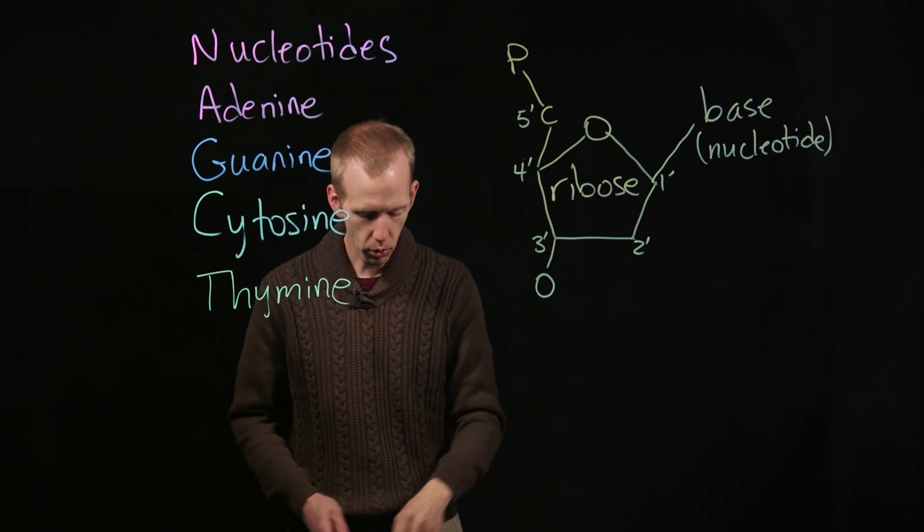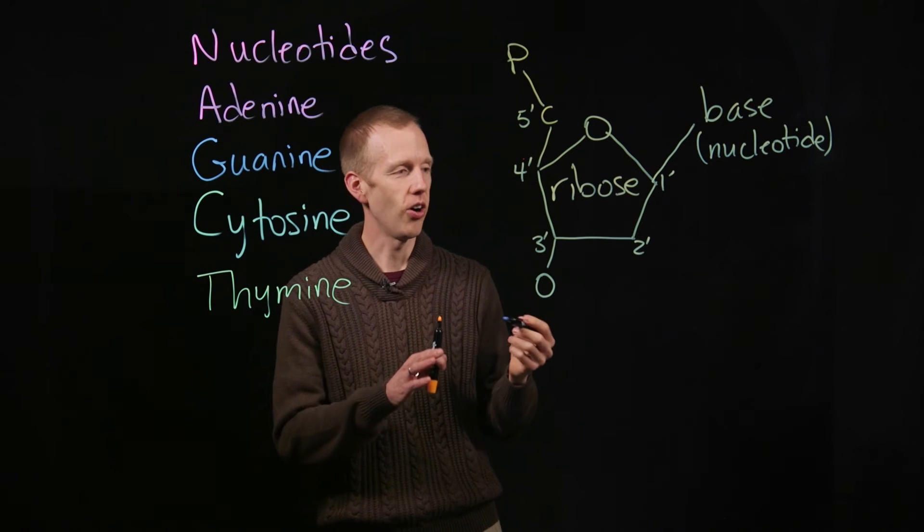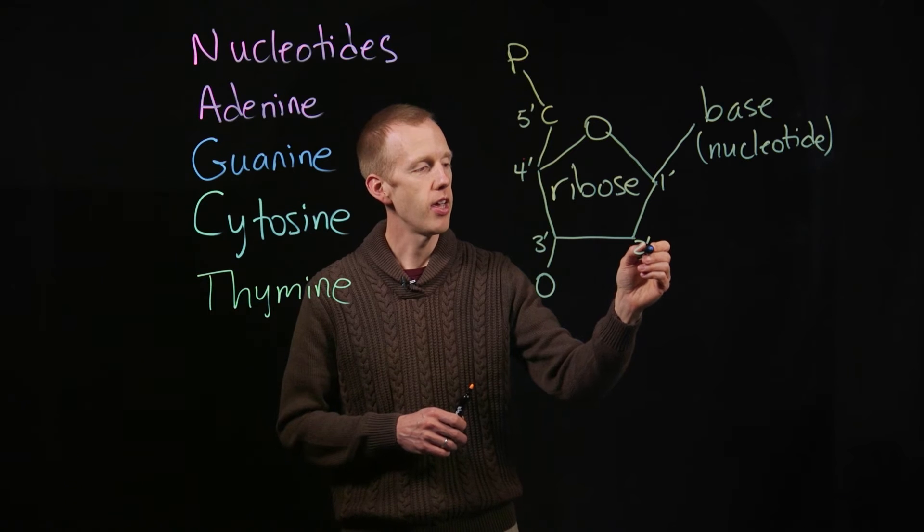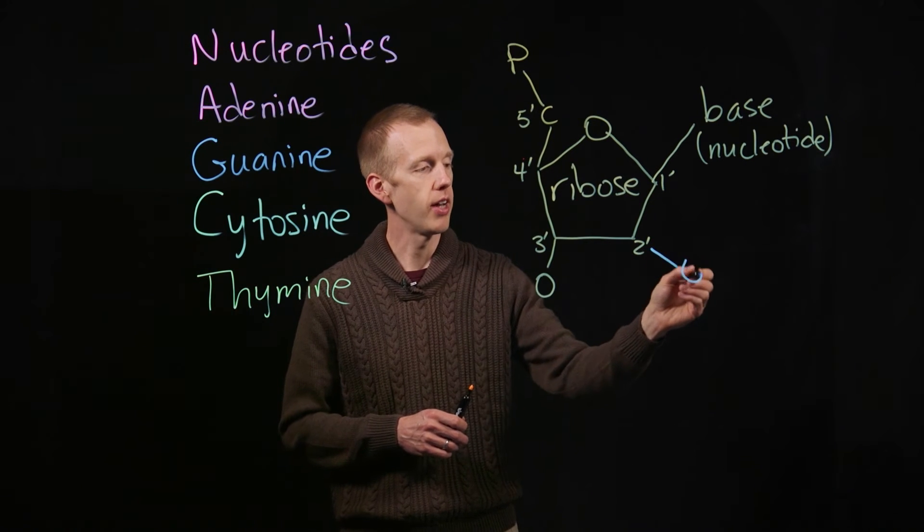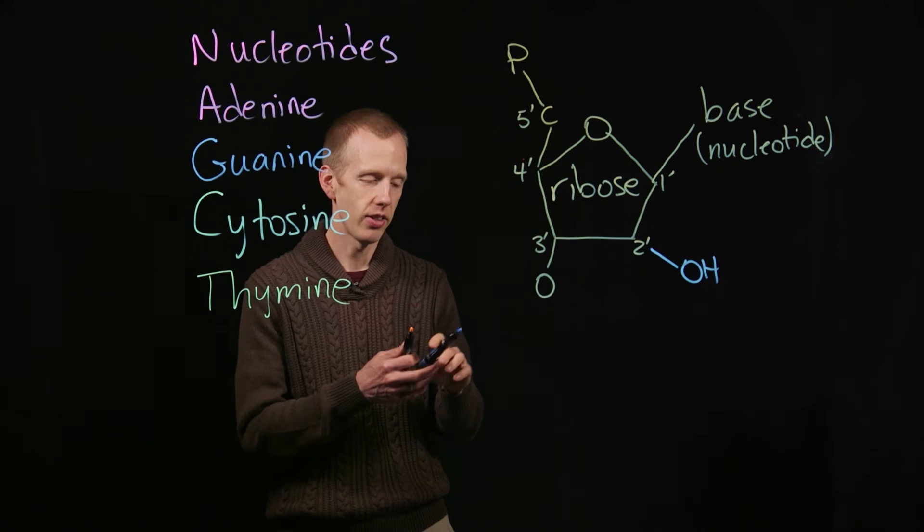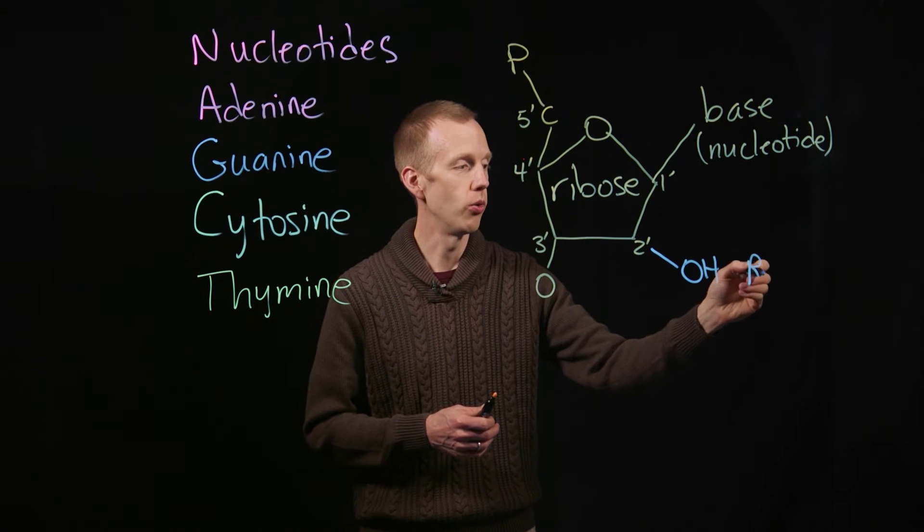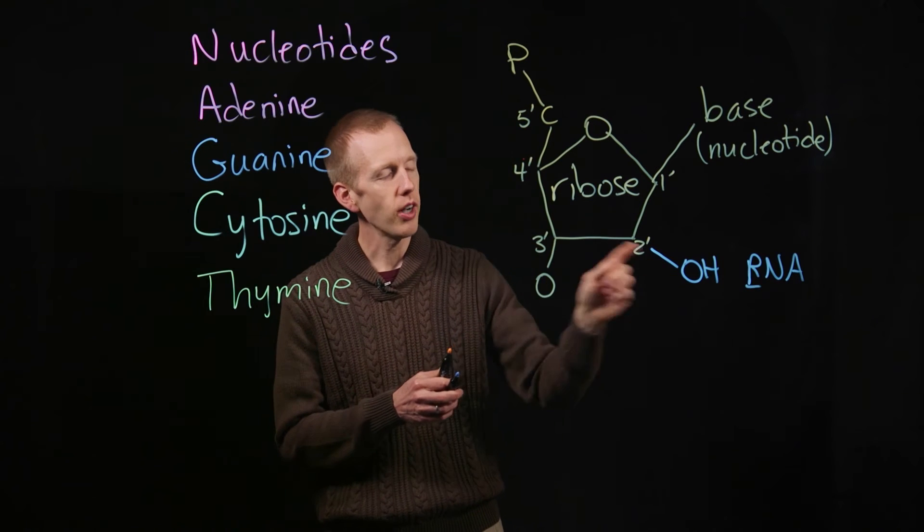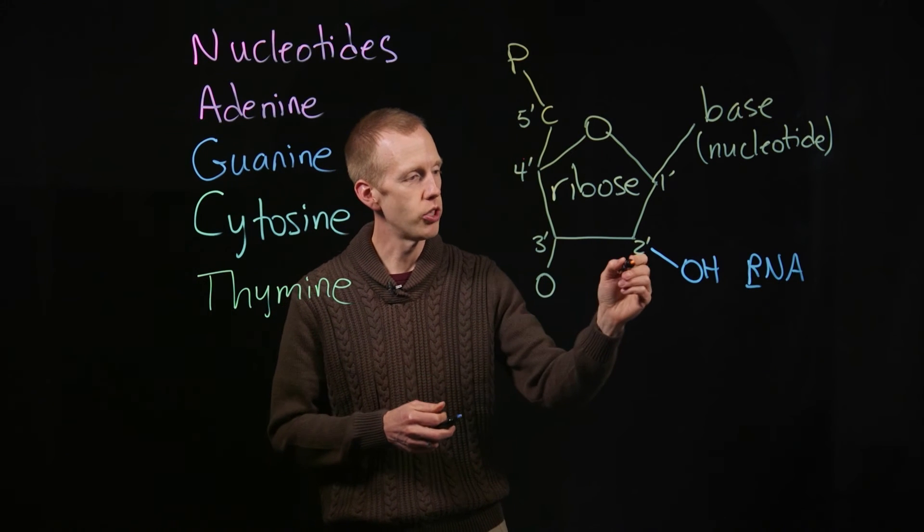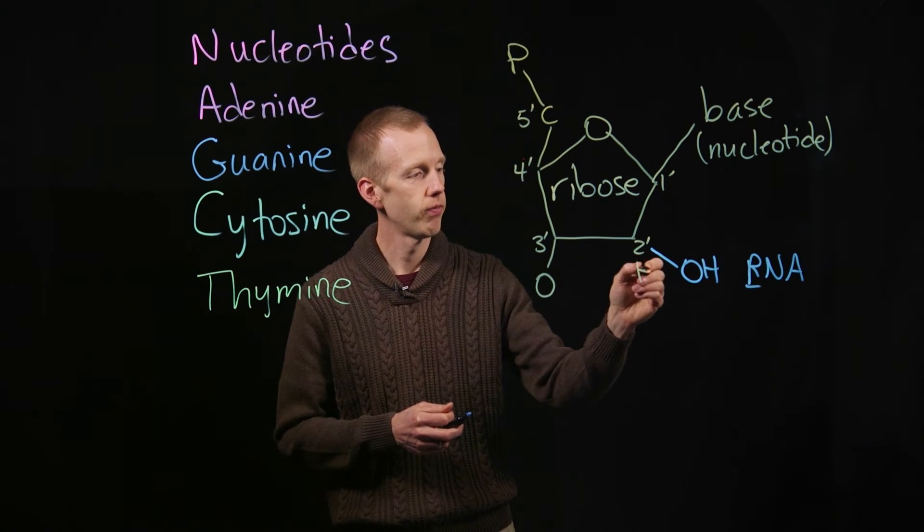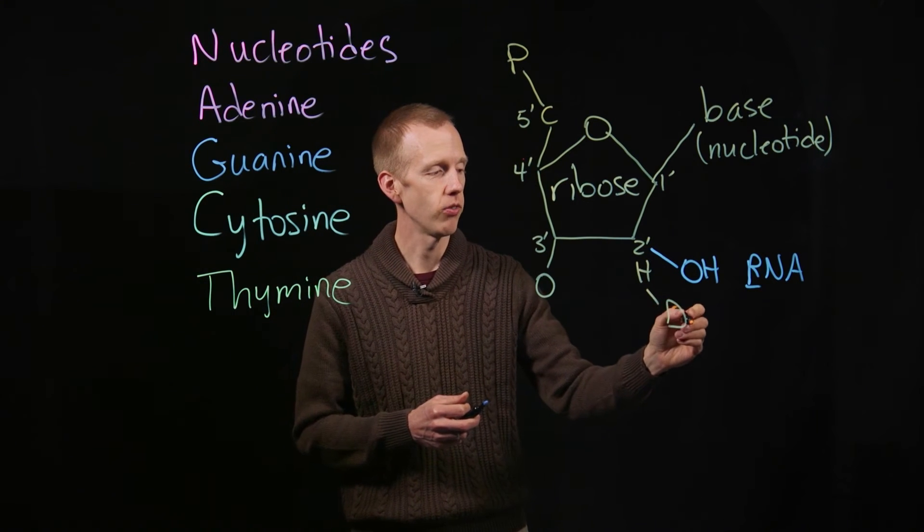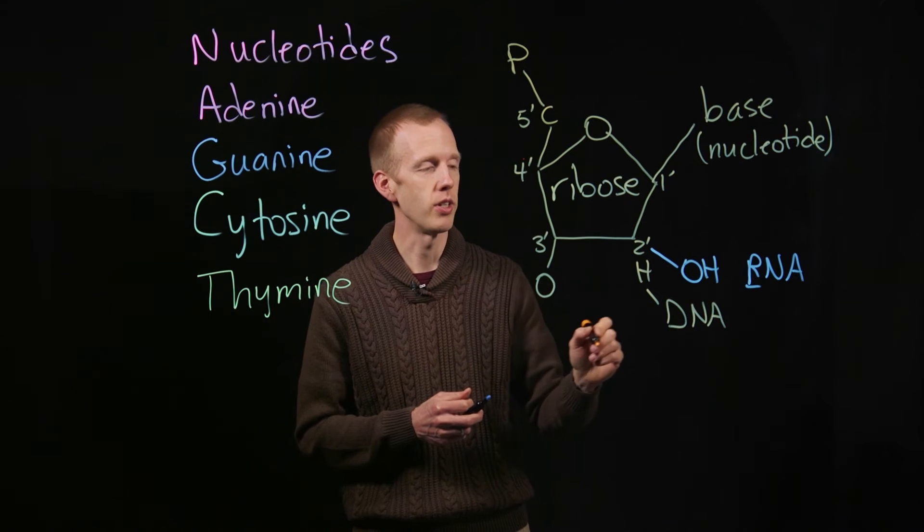And this is where there's an important difference between DNA and RNA. It's at the two-prime carbon. If that two-prime carbon has an OH group, that's RNA, ribonucleic acid. If there's no oxygen there, if that molecule just has a hydrogen, then that's deoxy—no oxygen—deoxyribonucleic acid, or DNA.